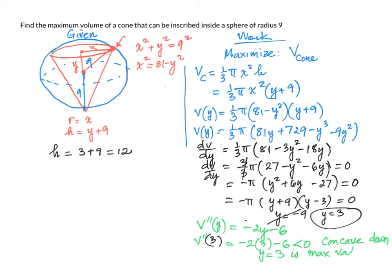And in order to get x, which is the radius of the cone, we are going to solve for x. So x squared equals 81 minus 3 squared. Now we have 81 minus 9, which is 72.